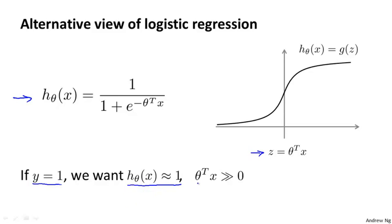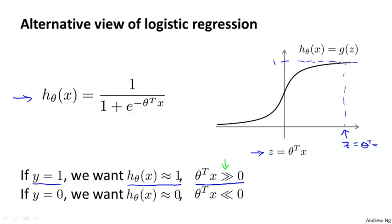Having h of x close to 1 means that theta transpose x must be much larger than 0. That's because if z — that is, theta transpose x — is much bigger than 0, far to the right on the sigmoid figure, the output of logistic regression becomes close to 1. Conversely, if we have an example where y equals 0, then we're hoping the hypothesis will output a value close to 0, which corresponds to theta transpose x being much less than 0.